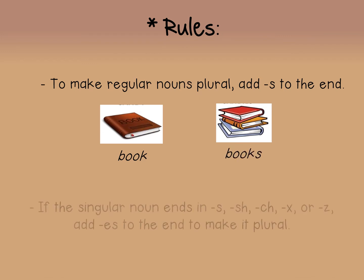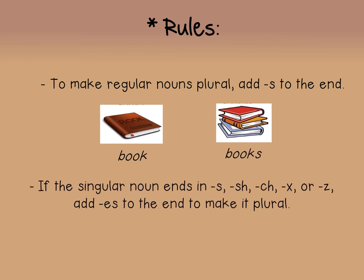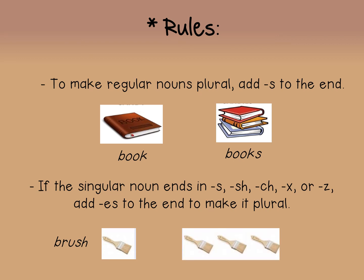The next rule: if the singular noun ends in S, SH, CH, X, or Z, you add -ES to the end of the word. For example, the word 'brush' ends in SH, so you add -ES to the end to make it plural: 'brushes.'